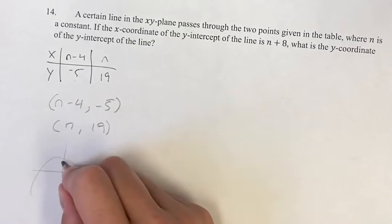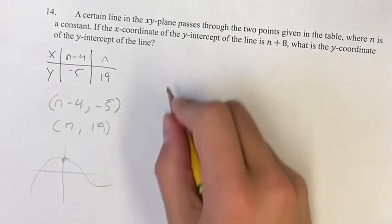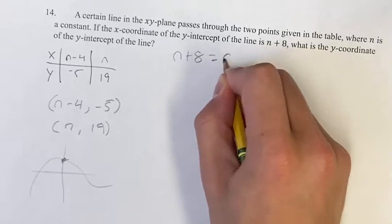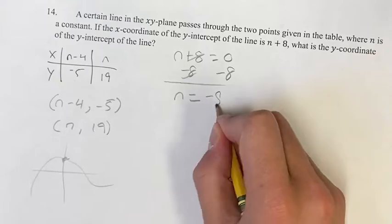Let's say this thing, the y-intercept right here. The y-value is whatever this is, but the x is just 0. So n+8 is equal to 0. Subtracting 8 from both sides, we get that n is equal to 0 minus 8 is -8.